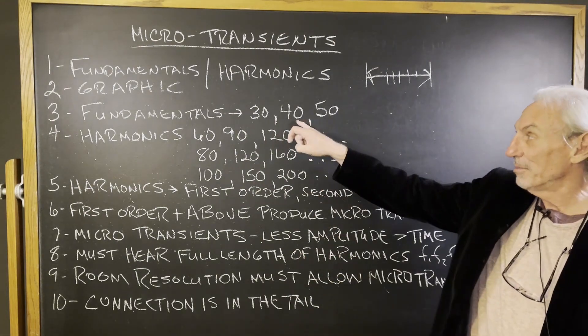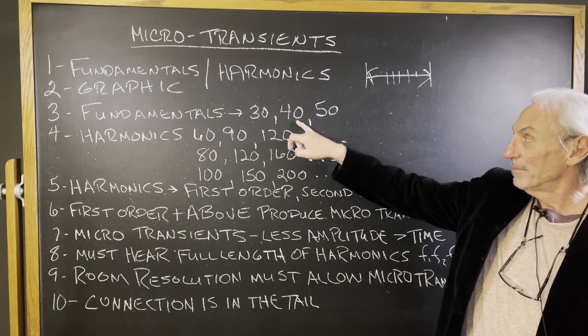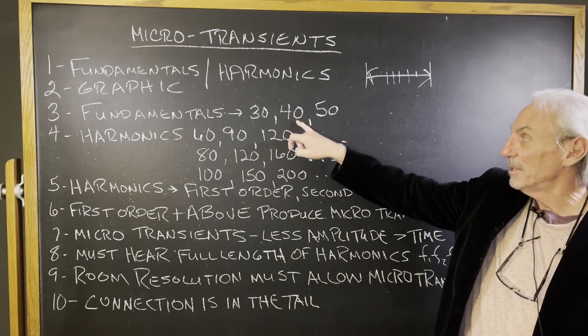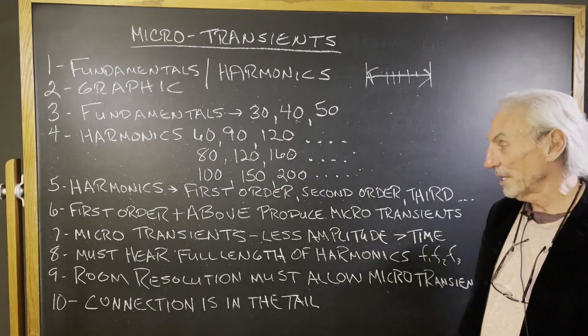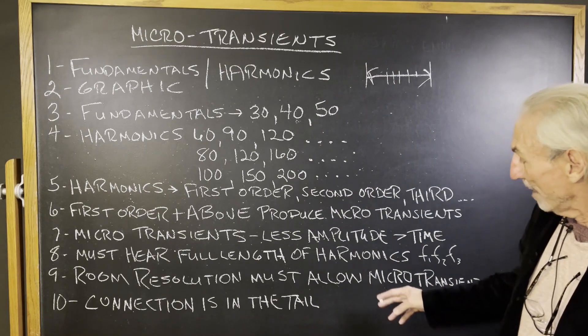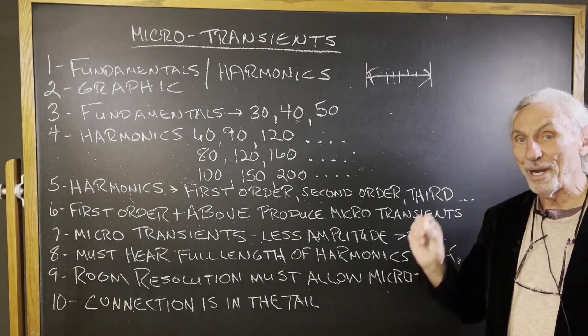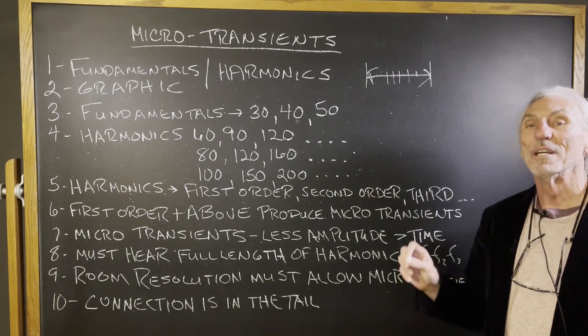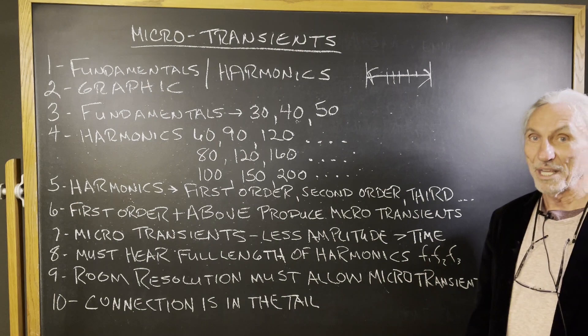Now, if you don't get good resolution here, good attack and decay and proper decay rates within the room, these are going to suffer. So everything, remember, in acoustics works together. There's no quick fix. The room resolution must allow for the microtransient. So it's all about rate and level, consistency, applying the right rate and level on each wall surface area. That's the key.